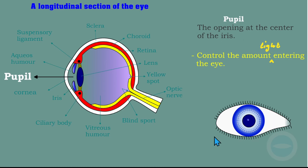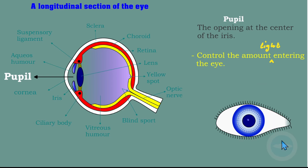The next part is the pupil. The pupil is the opening at the center of the iris. The functions of the pupil: it controls the amount of light entering the eye, or it allows light to enter the eye. In the longitudinal section, the pupil is the hole in the iris; in the front view, this opening is the pupil.